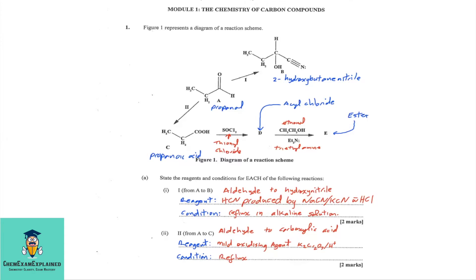1A, state the reagents and conditions for each of the following reactions. Part 1, from A to B. Now again, looking at A to B, you're going from an aldehyde to a hydroxynitrile. So, the reagents required is sodium cyanide or potassium cyanide with HCl. That reaction would produce HCN. The condition required is reflux in alkaline solution. Part 2, A to C. This is going from an aldehyde to a carboxylic acid. Reagents required? A mild oxidizing agent like acidified potassium dichromate. Condition on the reflux.